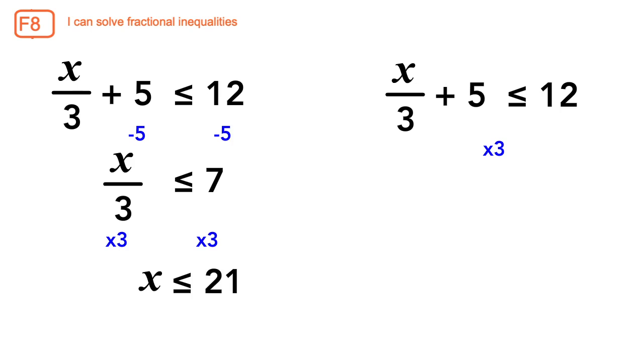What happens to the inequality when we multiply by 3 first? The common misconception would be to have the next step be x plus 5 less than or equal to 36, which is incorrect as both sides were not properly multiplied by 3.